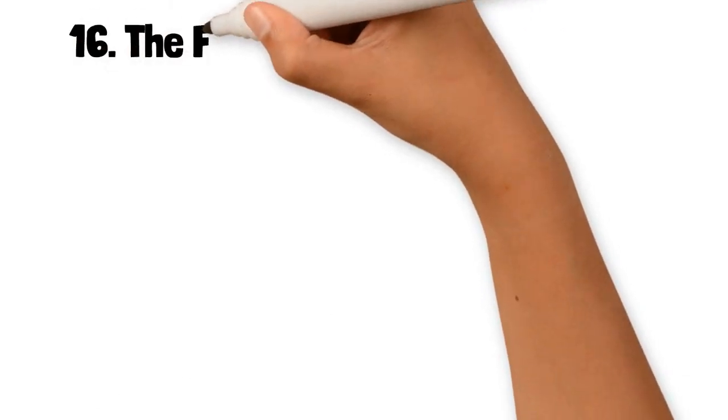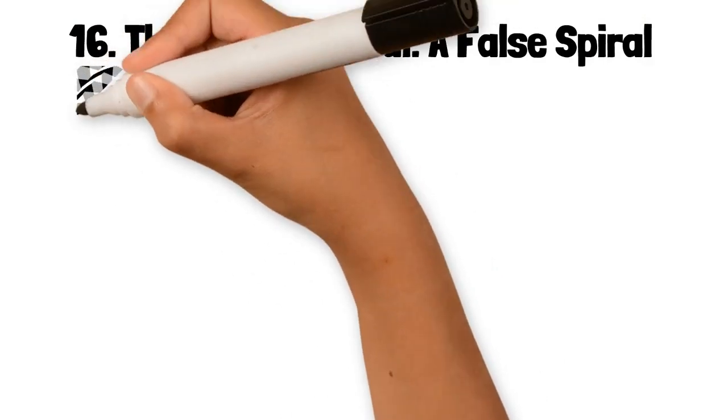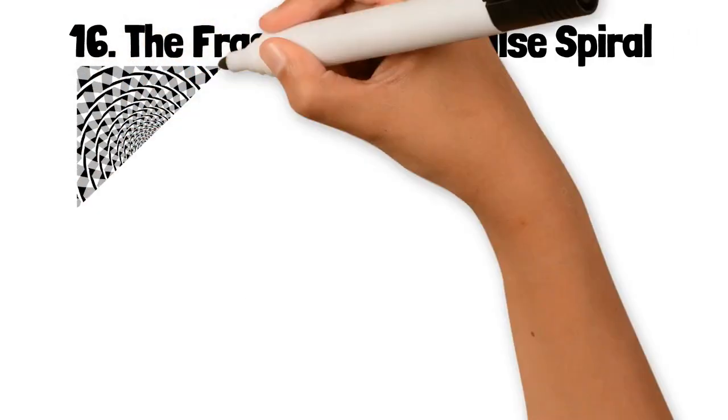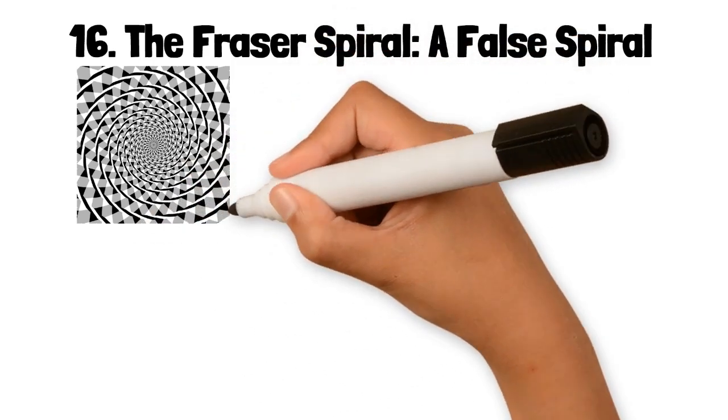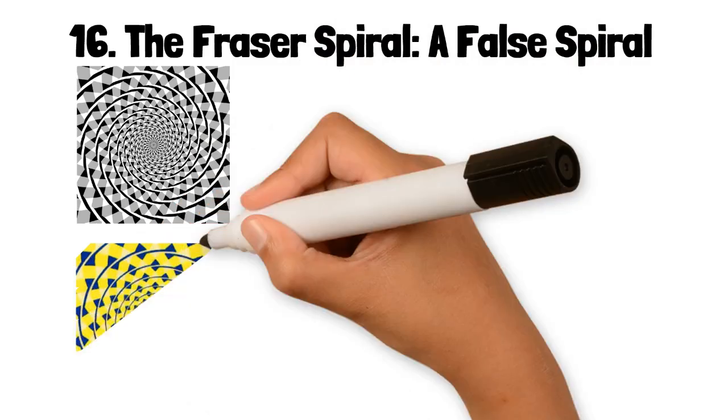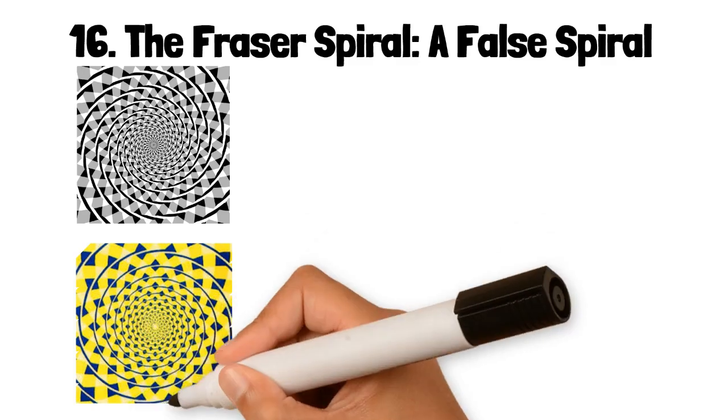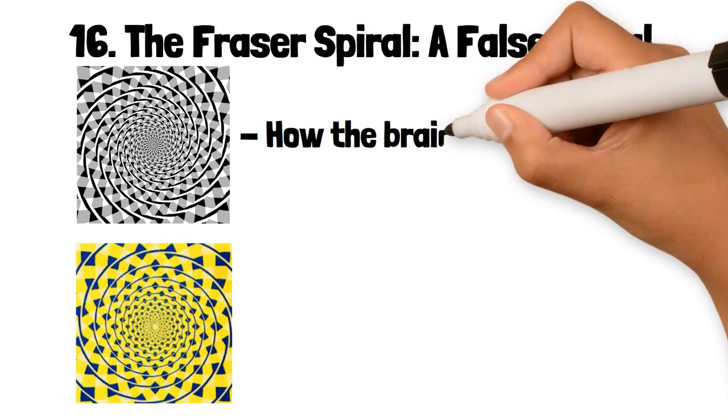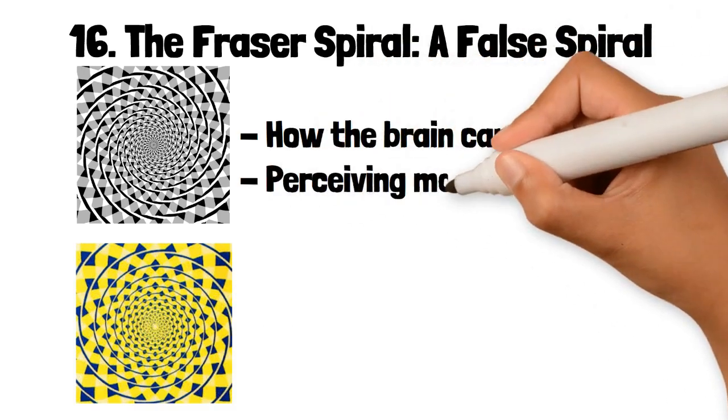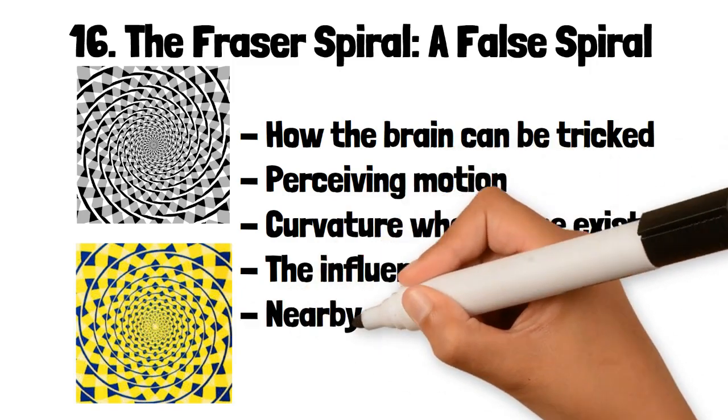16. The Fraser Spiral: A False Spiral. The Fraser Spiral illusion, also known as the Twisted Chord illusion, involves a series of concentric circles that appear to form a spiral. However, upon closer inspection, the circles are not actually spirals but are made to look like spirals due to the arrangement of short diagonal segments within them. This illusion shows how the brain can be tricked into perceiving motion or curvature where none exists due to the influence of nearby visual elements.